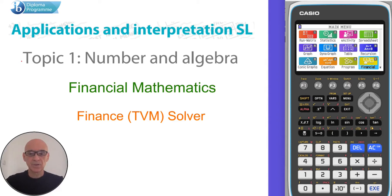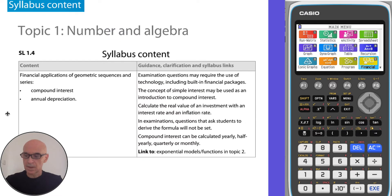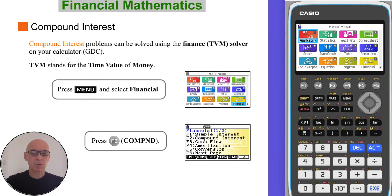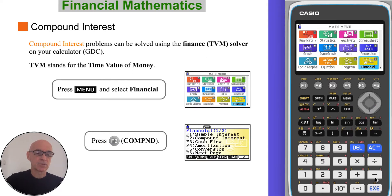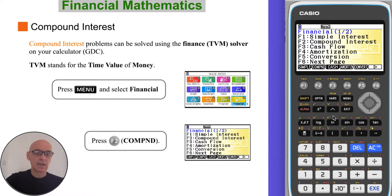Hello, in this video I'm going to talk about financial mathematics, specifically about using the finance solver, as shown here in the syllabus. Compound interest problems can be solved using the finance solver on your calculator. To access it from the main menu, select Financial, then press F2 for compound interest.